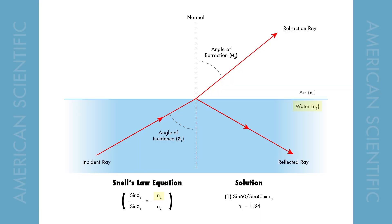The law of refraction, also known as Snell's law, is a formula used to describe the relationship between the angle of incidence and the angle of refraction. Here N1 represents the refractive index of the first medium, water, while sine theta 1 represents the incident angle, which we measured to be 40 degrees. N2 is the index of the second medium, air, with sine theta 2 representing the angle of refraction, which is 60 degrees. Now with this information you'll be able to solve the Snell's law equation.